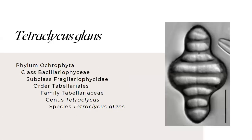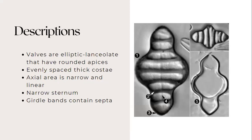Next species is the Tetracyclus glans from the family Tabellariaceae. So its descriptions are that valves are elliptic lanceolate that have rounded apices. And it has evenly spaced thick costae and its axial area is narrow and linear. It also has a narrow sternum and girdle bands that contain septa.